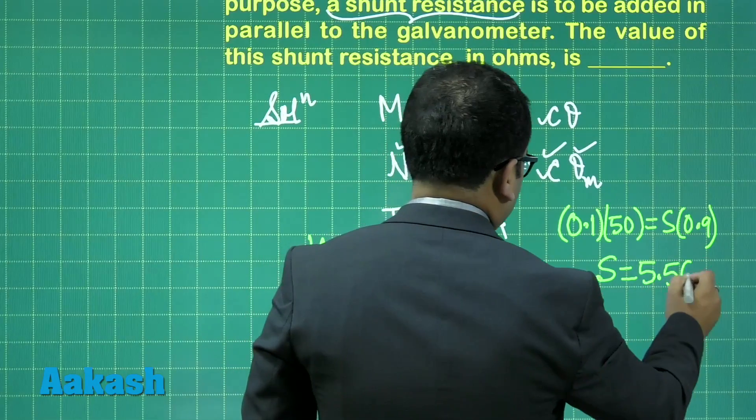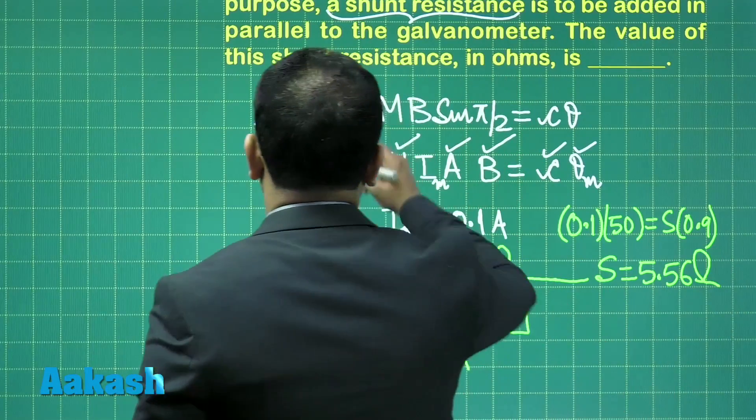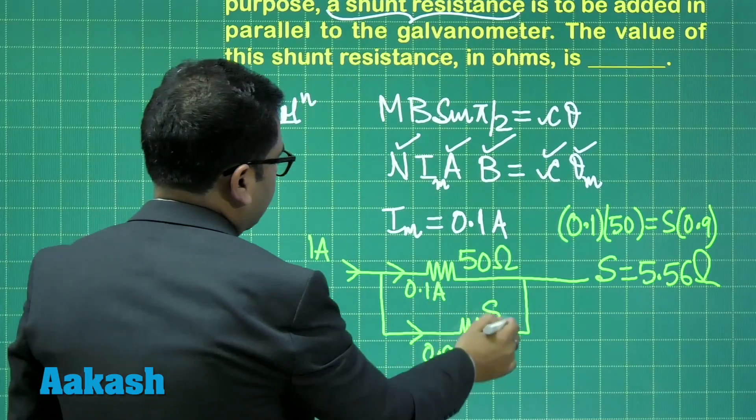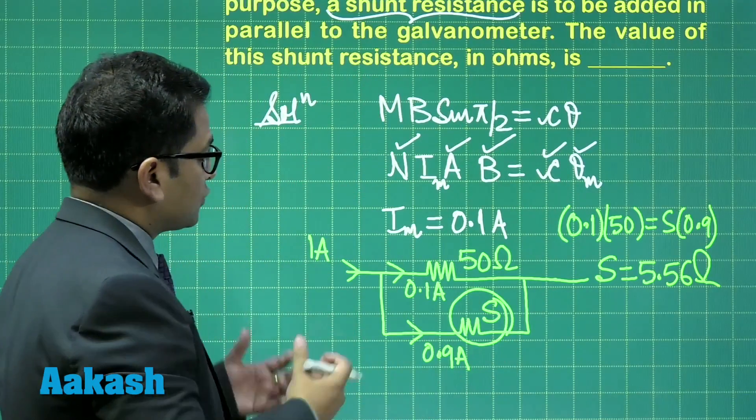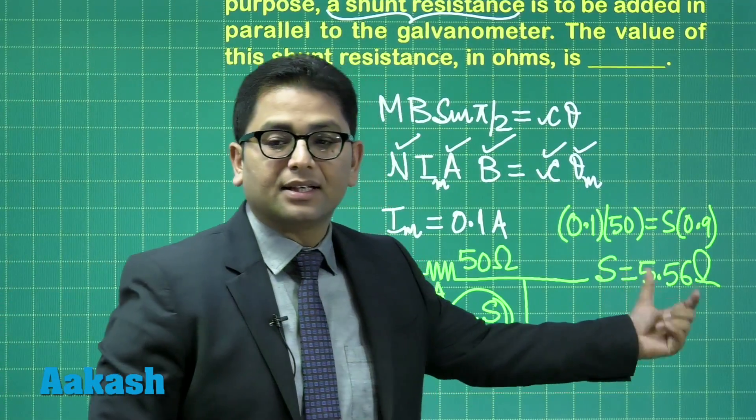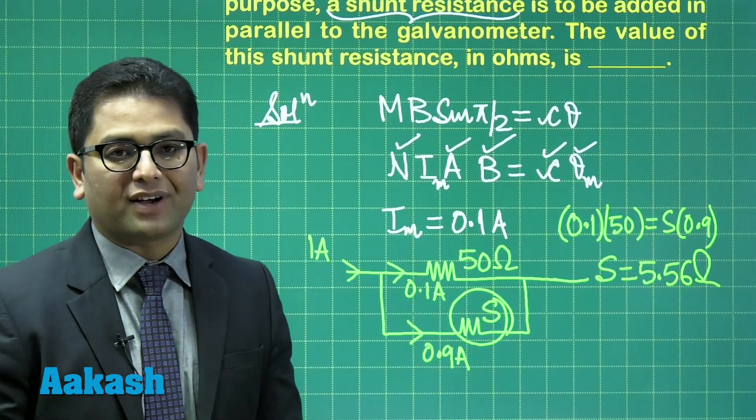That will be 5.56 ohm. And 5.56 ohm is the value of shunt that has to be connected in parallel. The answer was asked in ohms, so the correct answer for this would be 5.56.